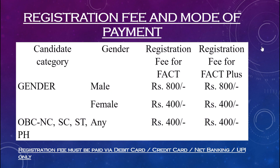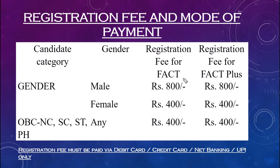Registration fees must be paid via debit card, credit card, net banking, or UPI only — demand drafts, IPO, or money orders are not accepted. For male candidates, the fee for FACT or FACT Plus is ₹800. Note that you can sit for either FACT or FACT Plus only — not both at the same time. For female candidates and SC, ST, OBC, and physically handicapped or disabled persons, the fee is ₹400.